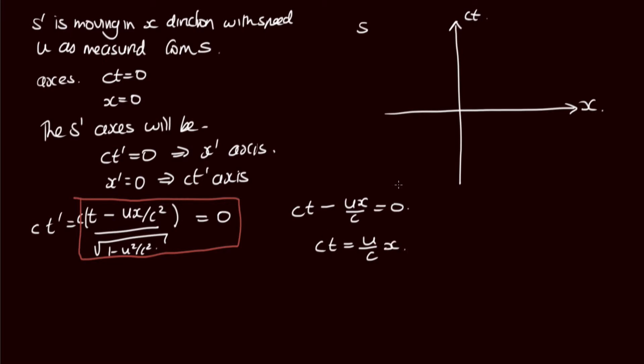We can write this as ct equals (u/c)x. So this is our y, and this is our x. So u/c is the gradient of this line. So a line with gradient u/c, we can draw that on our diagram over here like this. This is the x' axis, and the gradient is equal to u/c.